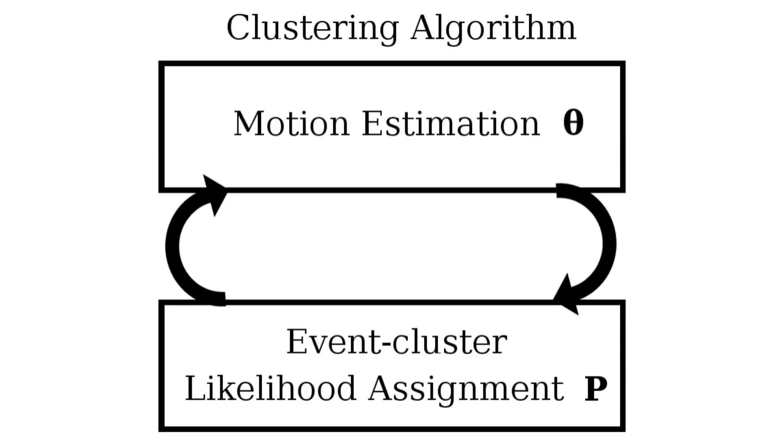To get motion compensation, we need likelihoods. We solve this through iterative, combined optimization of both. Here are some results.